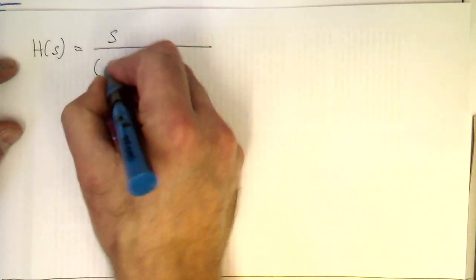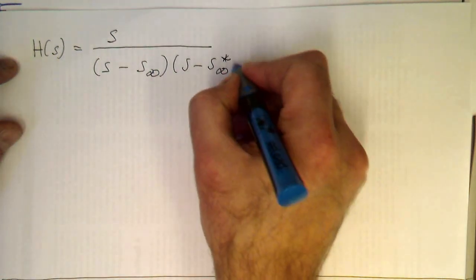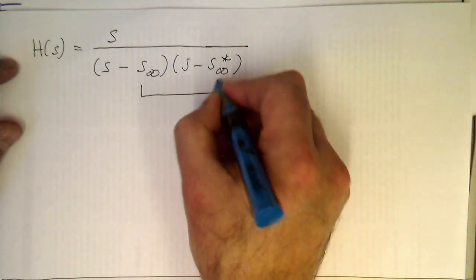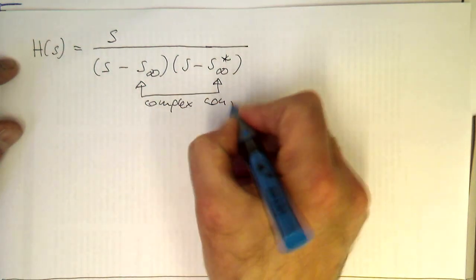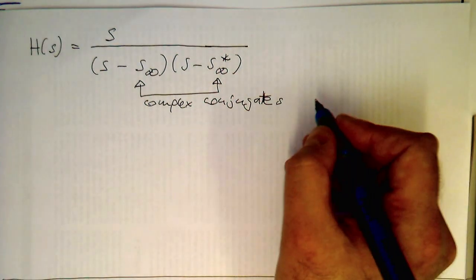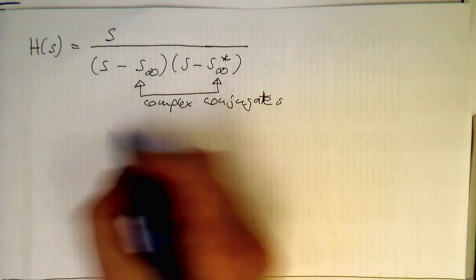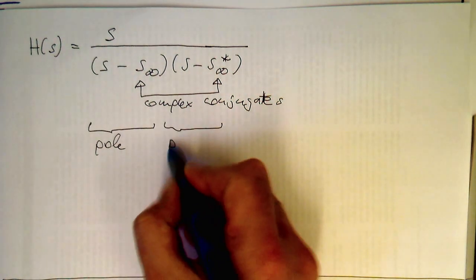Let's write our analog transfer function again and transform it step by step: S minus S_∞, and then S minus S_∞ star. Remember, these are complex conjugates. So we have two poles here — that's a pole, and that's a pole.